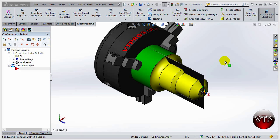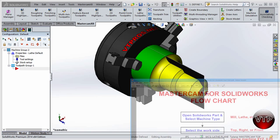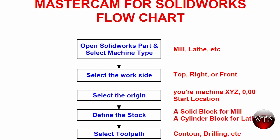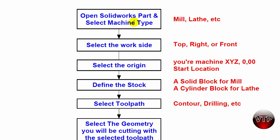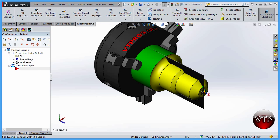Welcome back. In this session we're going to go to the next step in our flowchart. So far we've opened up SolidWorks part, selected the machine type to be lathe, selected a work side, selected the origin being the front of the part, and then lastly we defined the stock. The next thing we want to do is select the toolpath.